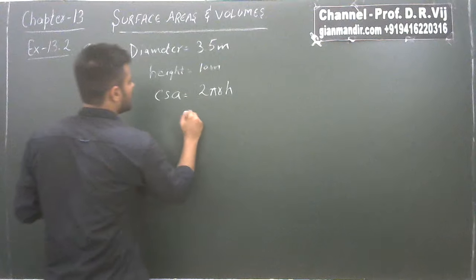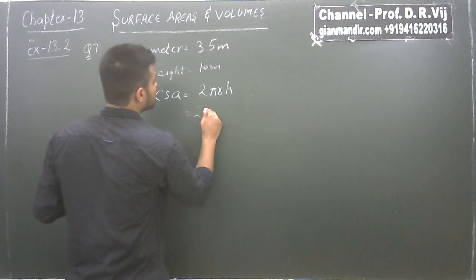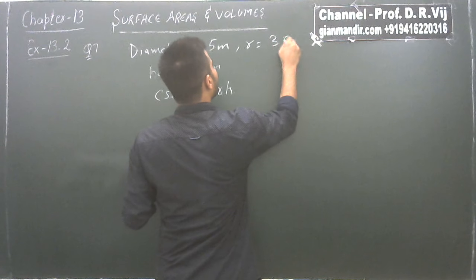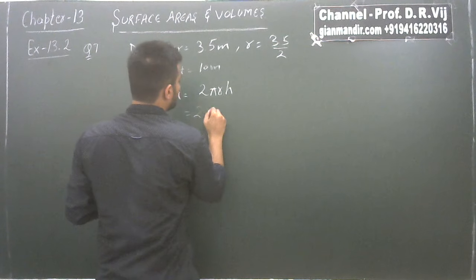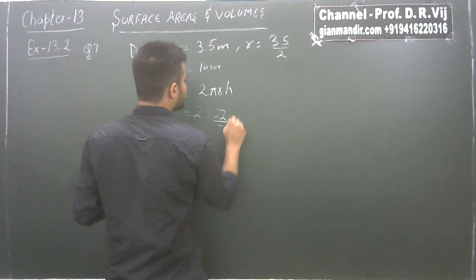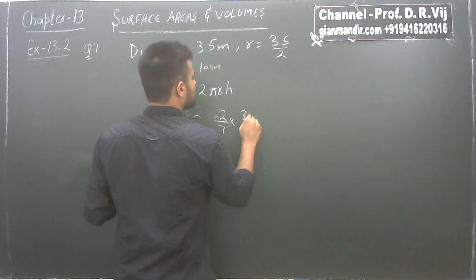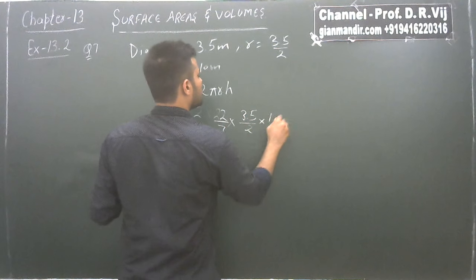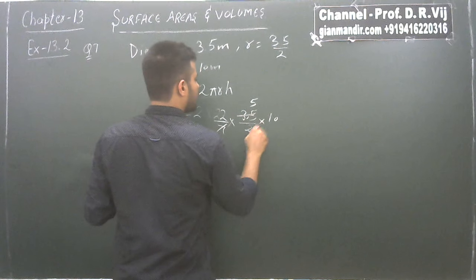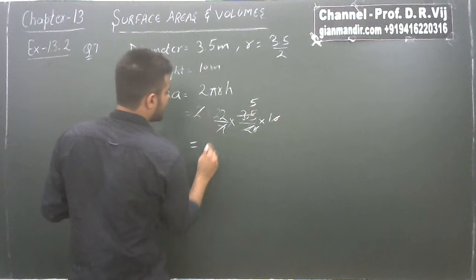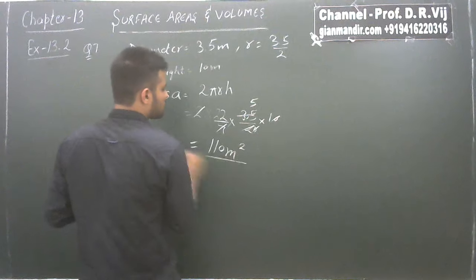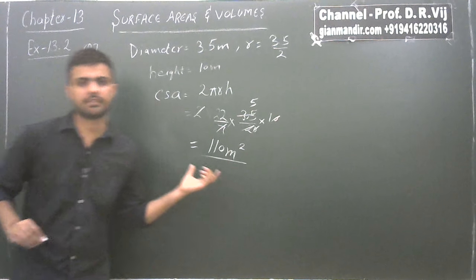Now we just put the values. The diameter is given, so radius will be 3.5 upon 2. So it becomes 2 × (22/7) × (3.5/2) × 10. Solving this, we get 110 meter square. That is the curved surface area of the well.